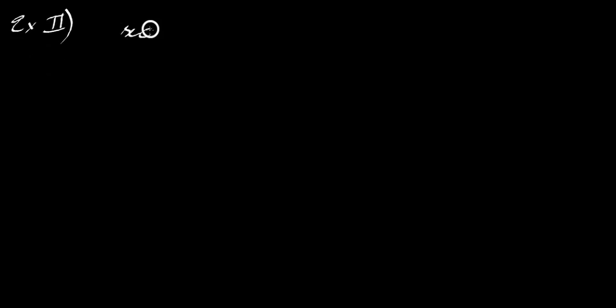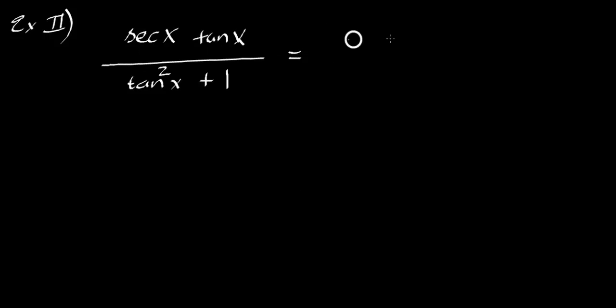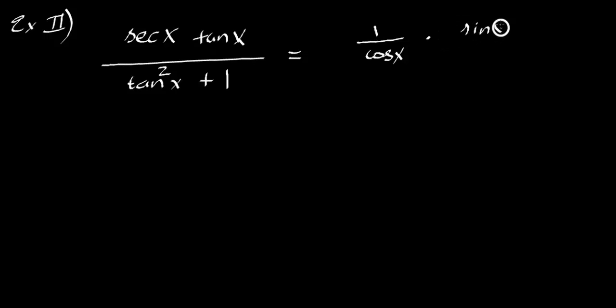Let's jump into our next example, which will be fairly shorter. You have secant x · tangent x over (tangent²x + 1). I'm going to rewrite secant as we know it, which is 1 over cosine x. Since secant is not squared, you don't square the cosine — it's just x. And tangent is just sine x over cosine x.